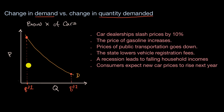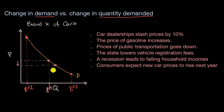So this would be a scenario where maybe the equilibrium price and quantity demanded are associated with a certain point before car dealers slash their prices — let's call that quantity demanded three. But then when they slash their prices, prices go down, and we end up at a new point on our demand curve — quantity demanded four. So this would be a change in quantity demanded, and in this case the quantity demanded would go up.